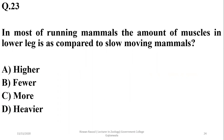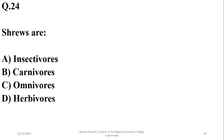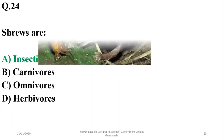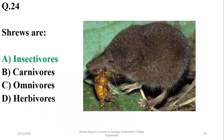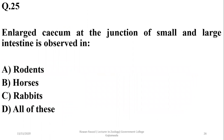Question 23: In most running mammals, the amount of muscle in the lower legs is usually fewer compared to slow-moving mammals. Question 24: Shrews are insectivorous mammals, as are hedgehogs. A large cecum at the junction of the small and large intestine is observed in rodents, horses, and rabbits.